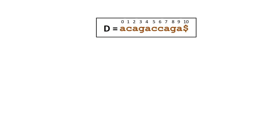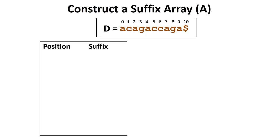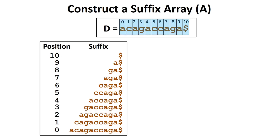To help us construct a suffix tree, we will first create a suffix array. Each element in the suffix array corresponds to a position in the DNA sequence and its corresponding suffix. For example, at position 10, the suffix is the dollar sign. At position 9, the suffix is an a followed by the dollar sign. The suffix ga dollar sign is at position 8. The suffix AGA dollar sign is at position 7, and so on. We can continue to build this list backwards until we reach position 0, where the suffix is the entire DNA sequence in the database.